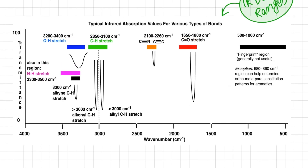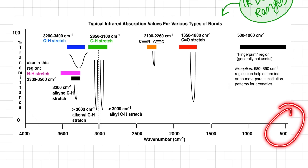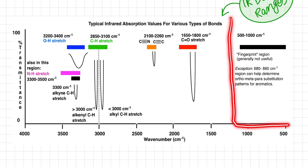In a typical IR spectrum, the Y axis is shown in the form of transmittance whereas the X axis is in the form of wave number. The spectrum starts from 4000 per centimeter down to about 400 per centimeter. The region from 1000 to 500 per centimeter is called the fingerprint region, whereas 4000 to 1000 per centimeter is called the functional group region.